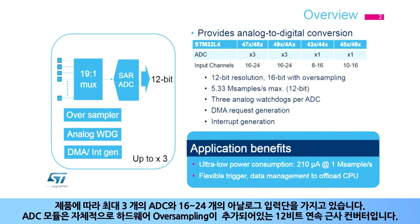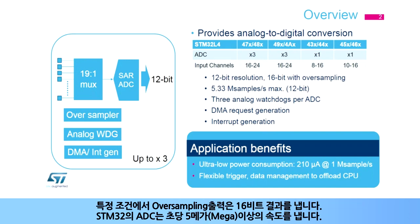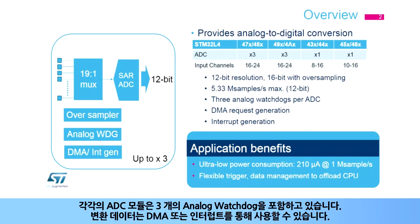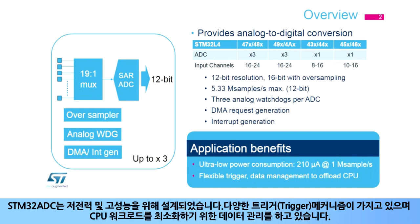There are up to three ADCs and 16 to 24 analog inputs, depending on the device. The ADC module itself is a 12-bit successive approximation converter with additional oversampling hardware. Under certain conditions, the oversampled output can have a 16-bit result. The sampling speed is more than 5 mega samples per second. Each ADC module integrates three analog watchdogs. The data can be made available either through DMA movement or interrupts. This ADC is designed for low power and high performance. There are a number of triggering mechanisms, and the data management can be configured to minimize the CPU workload.